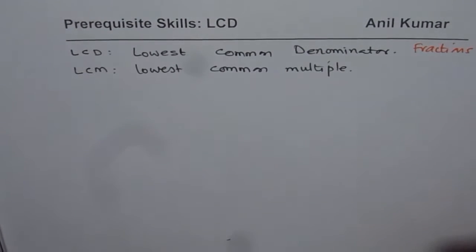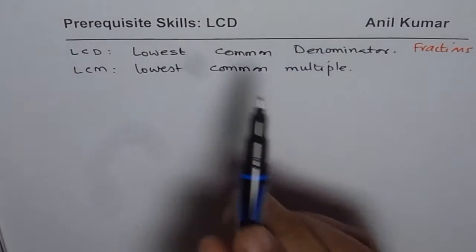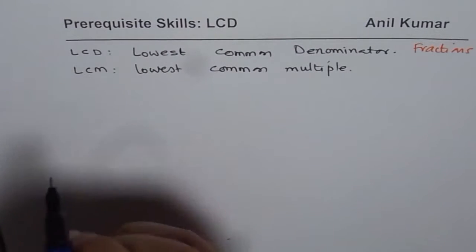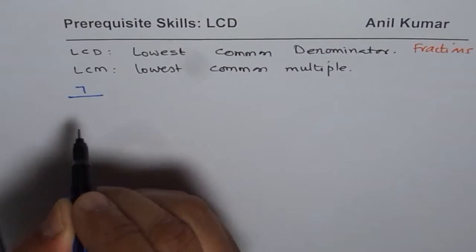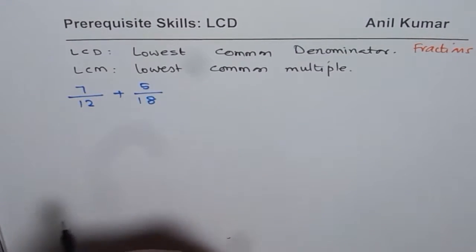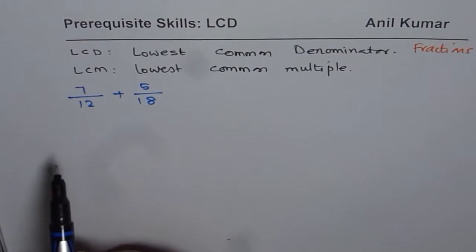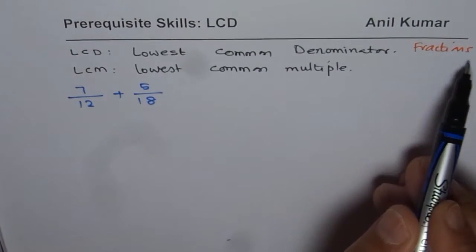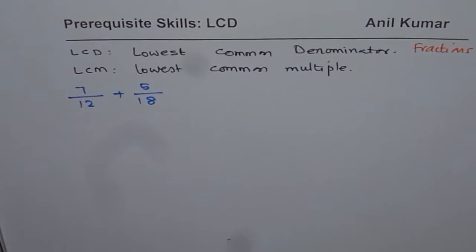Now let us see how to find the lowest common denominator or lowest common multiple. Let us say you have to add something like 7 over 12 plus 5 over 18. To add them we need to find the lowest common denominator, which is why LCD finds its application in fractions — to add or subtract fractions we should have the same denominator. There are different techniques which we will combine here.